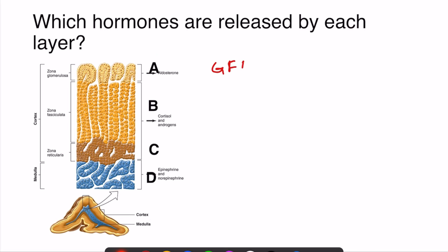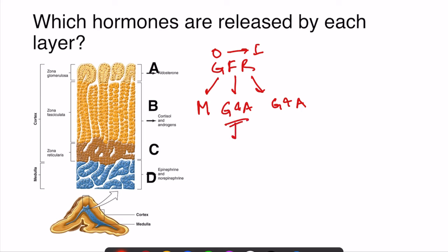We should remember the mnemonic GFR: G for glomerulosa, F for fasciculata, R for reticularis — from outside to inside. The glomerulosa releases mainly mineralocorticoids; fasciculata releases mainly glucocorticoids; reticularis releases mainly androgens. However, fasciculata and reticularis actually release both glucocorticoids and androgens — remember this as questions can be asked either way. The medulla of the adrenal gland releases epinephrine and norepinephrine.